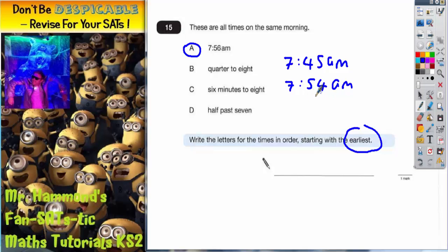Because remember, if you add on those six minutes to 54, that will get you to 60 minutes, and 60 minutes would take you up to eight o'clock. So it's got to be 7:54. The final one, half past seven, that's a nice and easy one. So that's going to be 7:30 AM.